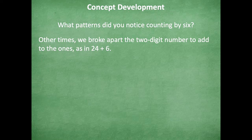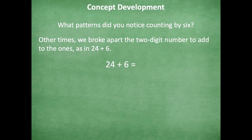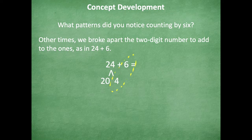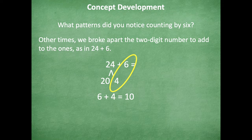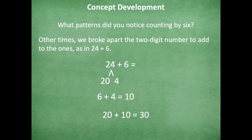Okay. All right, so other times we broke apart the two-digit number to add to the ones, as in 24 + 6. So here's how you could do that. So 24 + 6. So I want to make a ten. So I need to pull out a four to go along with the six, because 6 + 4 = 10. And then I know that 10 + 20 = 30. So 24 + 6 = 30. Okay, so those are just some of the ways that you could do that.